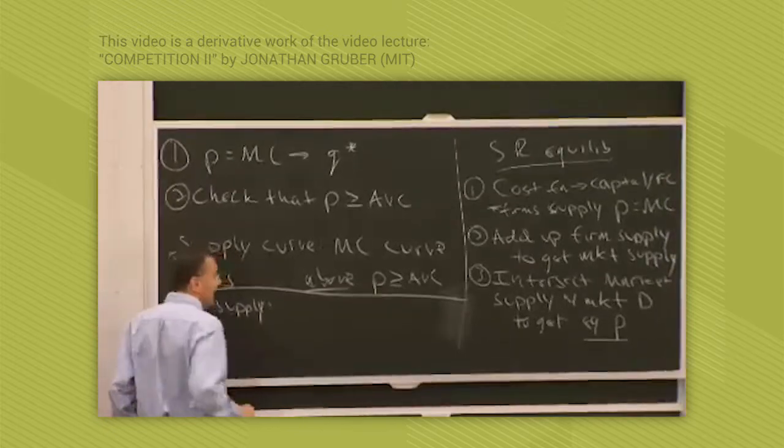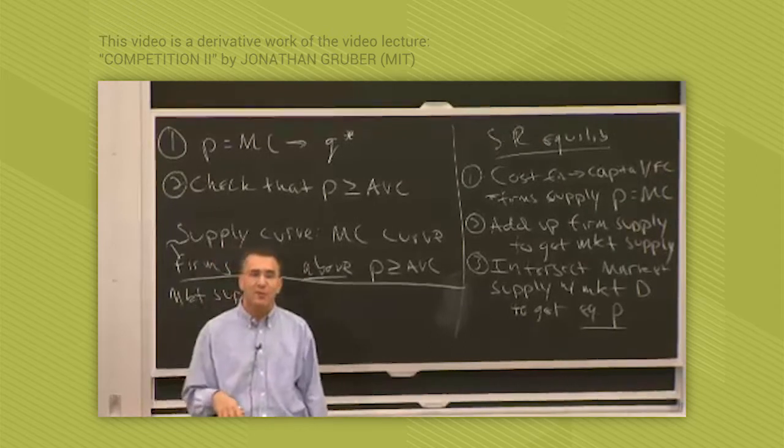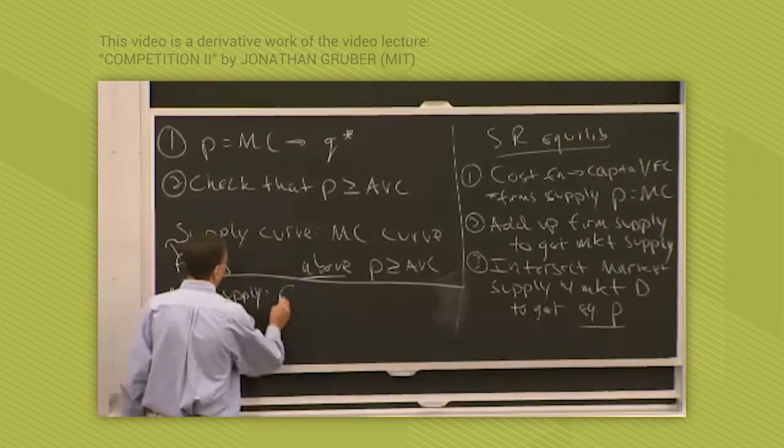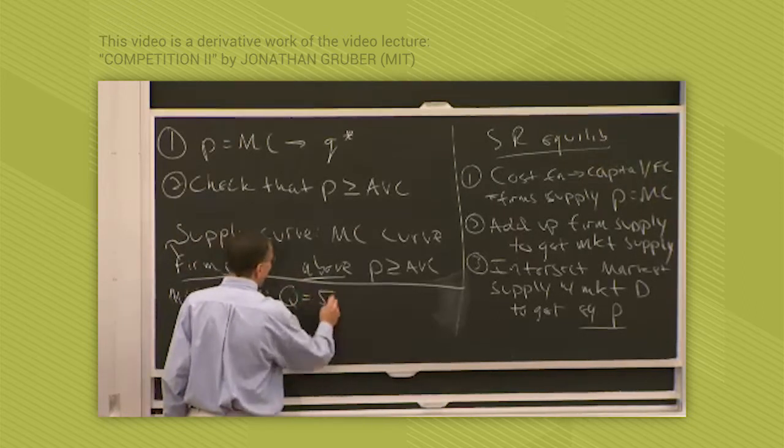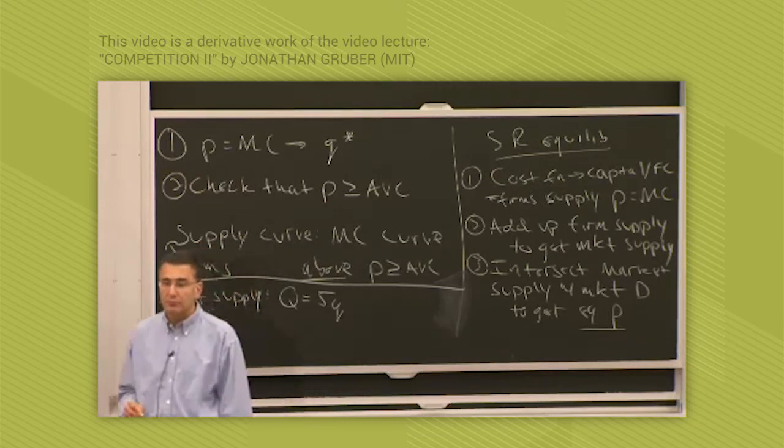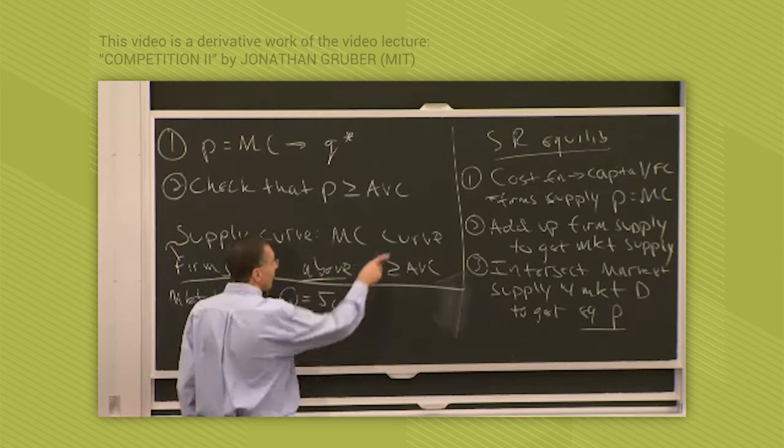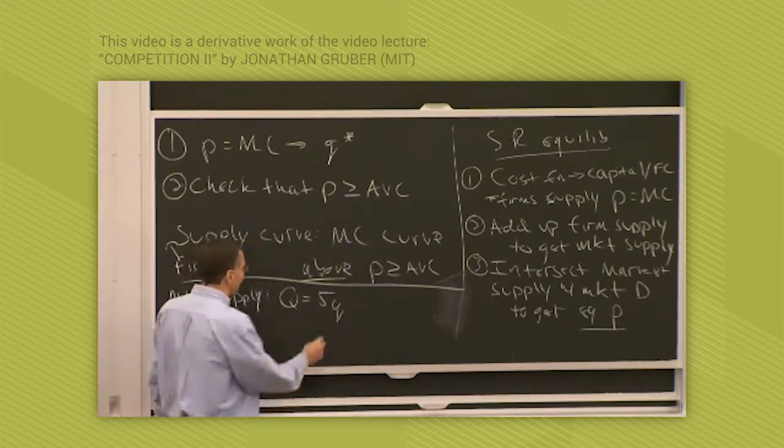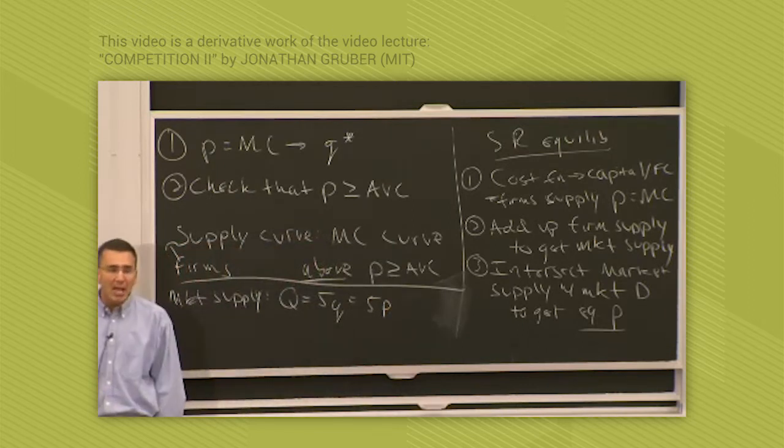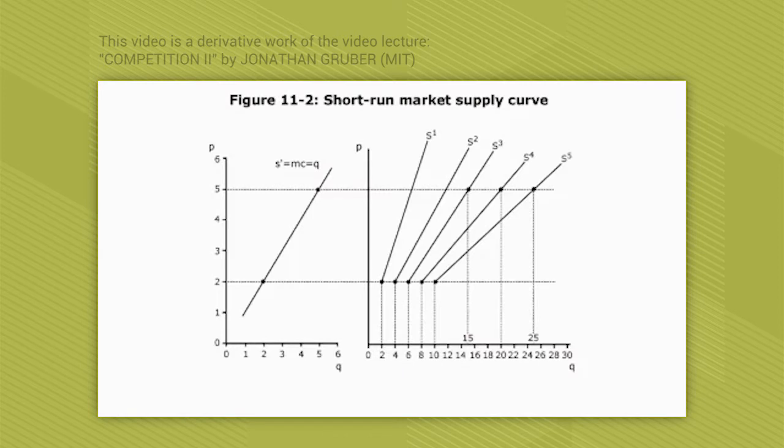Market supply is we have, and let's say, for example, there's five firms in the market. Just to make an example, let's say five firms have entered. There's five firms in the market. Well, the total market supply Q is five of the little Q's, because there's five identical firms in the market. Well we know from the marginal cost condition that's the same as saying Q equals five times P. So our market supply curve, which is actually S5 on figure 11-2, is Q equals 5P.